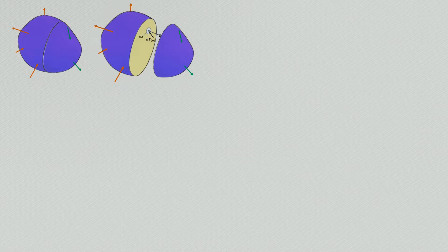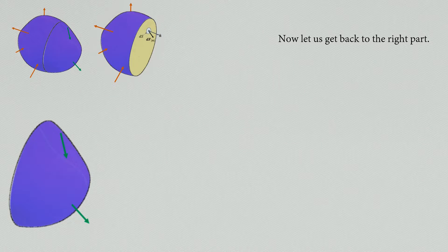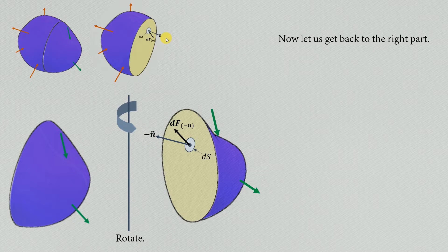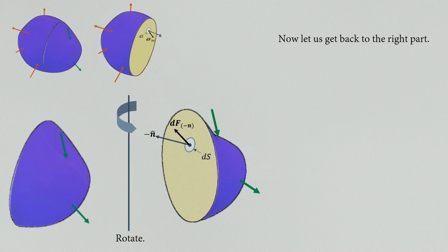Now let us get back to the right part that we set aside. To understand what is happening, let us rotate that part. We'll do a similar analysis on this surface: we take a small surface ds whose normal vector is now minus n, opposite to that on the left part. The net resultant force on this surface is dF minus n. Notice that this surface ds on the right and ds on the left are actually the same surface — they completely overlap when you match the two parts.